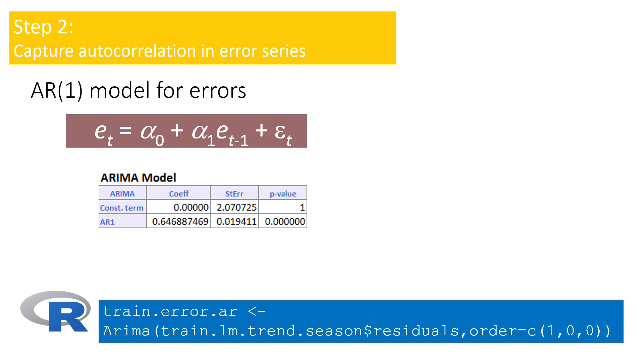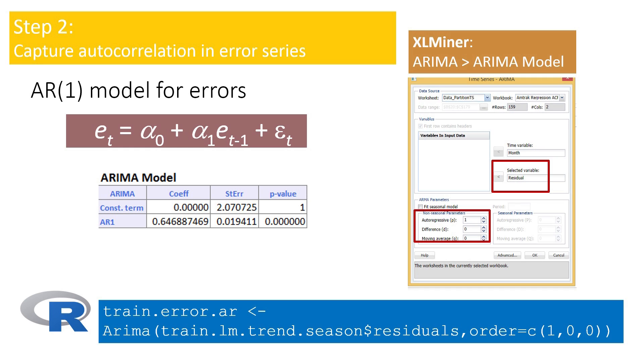A small note about software. Fitting an AR model with software is typically done by choosing the ARIMA function. In R, we use the ARIMA function, apply it to the residual series, and set the order C(1,0,0) to get an AR(1). You can change the value of 1 to get a different order for the AR model, but keep the other two parameters at 0 for now. In XLMiner, we choose the ARIMA model function, select the residual series, and set the AR(p) parameter to 1, and the other parameters to 0.